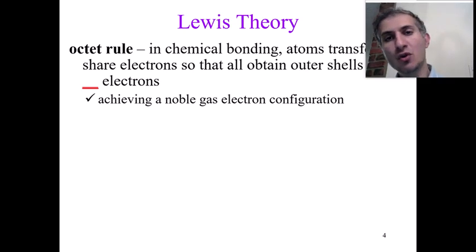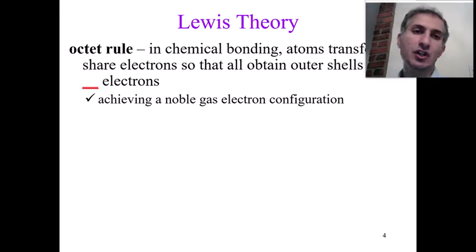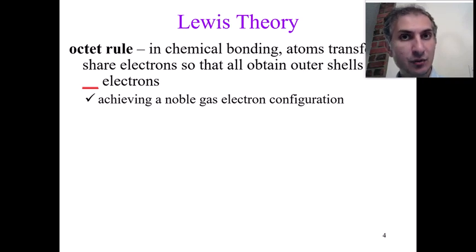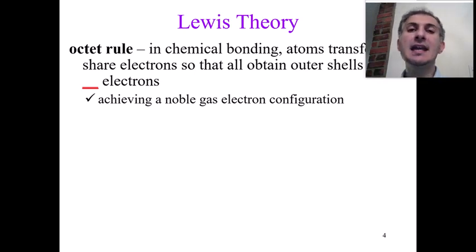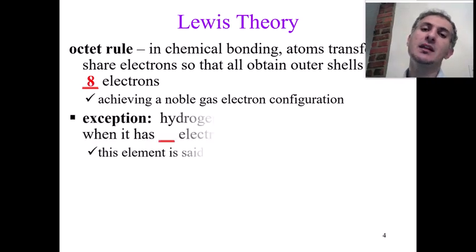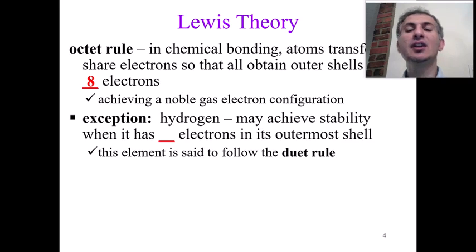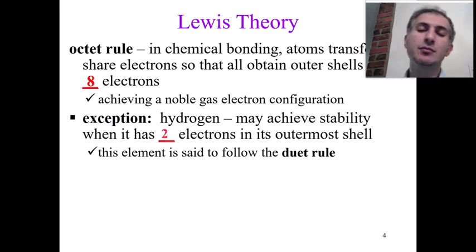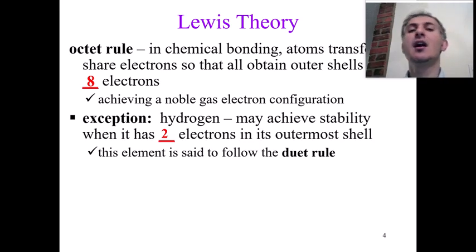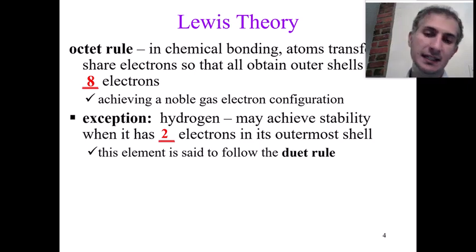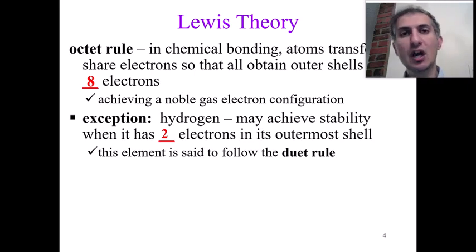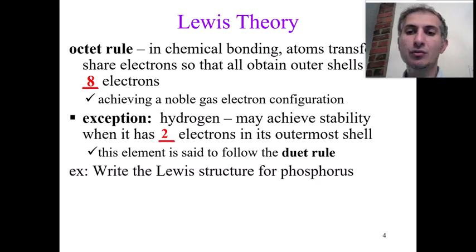One important rule in Lewis structure is that we aim to give any element eight electrons in the valence shell — we call this the octet rule. There is one exception: hydrogen. Your textbook may call it the duet rule, meaning hydrogen always makes two electrons, not eight. For all other elements we apply the octet rule.